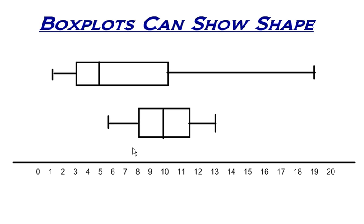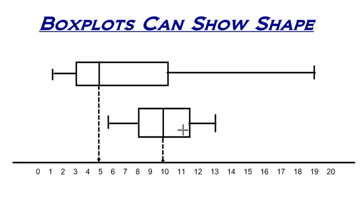There are a number of different things I can see. I can tell that the median for the data set on the top is a lot less than the median for the data set on the bottom. I can tell that the data set on top is more spread out than the data set on bottom by looking at the range. I can tell that most of the data in the box — the center of the data for the bottom set — is going to be higher than most of the data for the data set on top. I can also see that the maximum is a lot higher for the data set on top than on the bottom.